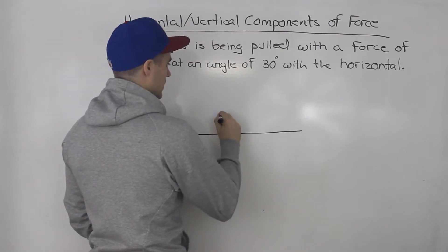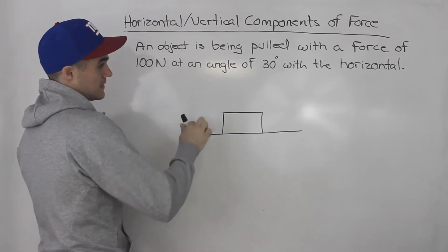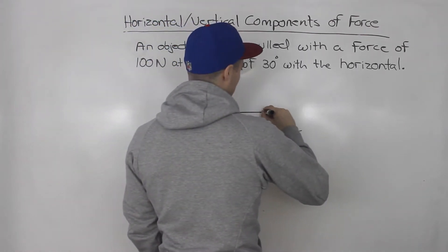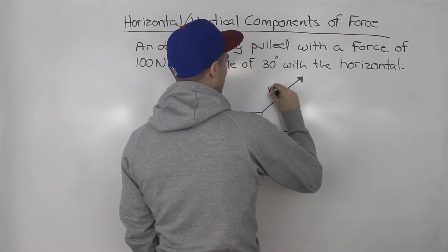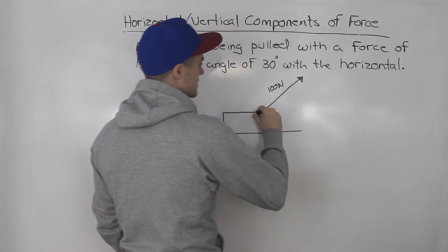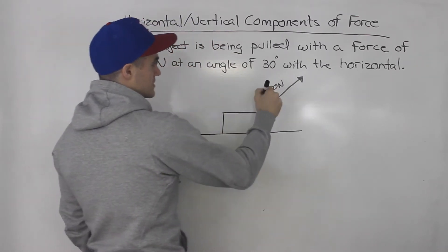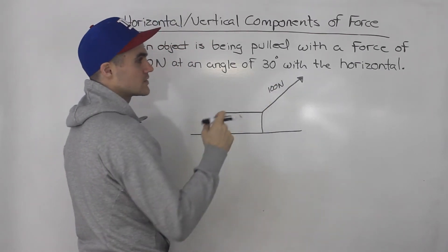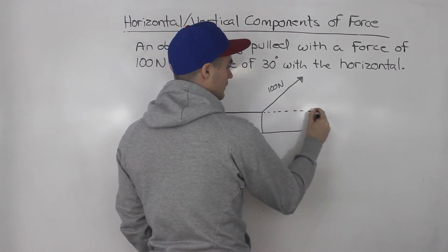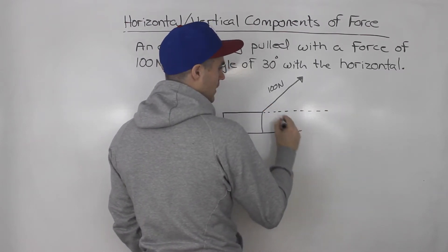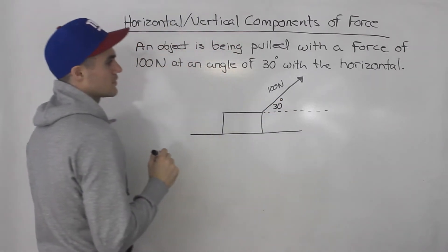Let's say we have some kind of object on the ground — could be whatever, maybe a box, a sled — and it's being pulled at a force of 100 newtons. So maybe this is like a rope or string attached to this object. And this force is making an angle of 30 degrees with the horizontal. So if we draw a horizontal line that is parallel to the ground, that angle is going to be 30 degrees.